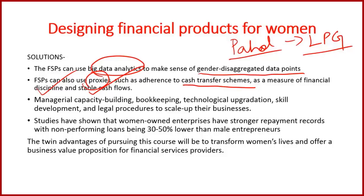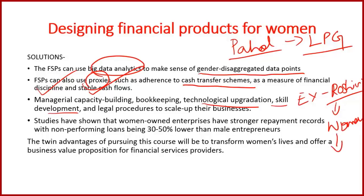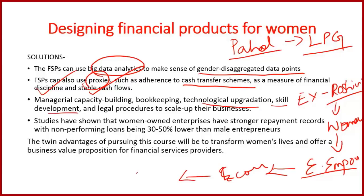Another important solution is increasing capacity building among women through schemes for technological upgradation and skill development. For example, the scheme Roshini is specially targeted towards increasing skill development of women, thereby providing them economic empowerment, which will also result in increased economic health and contribute to India's GDP.